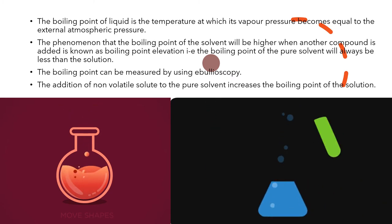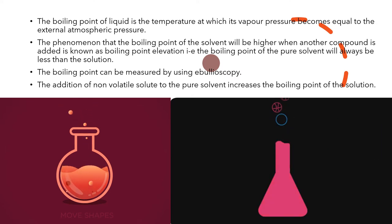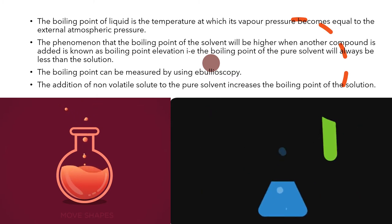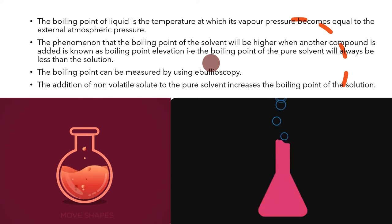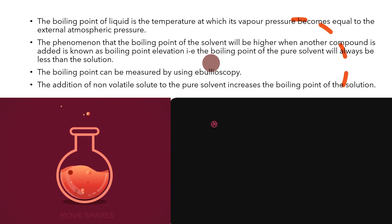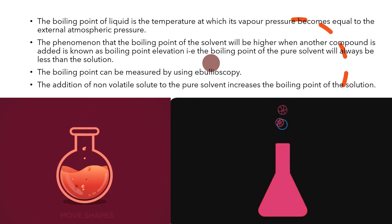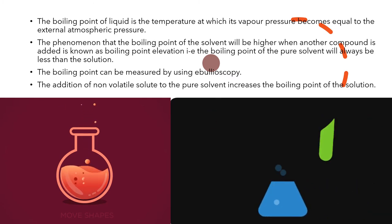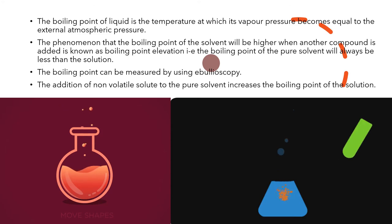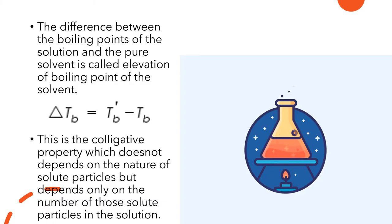To conclude, the solvent boiling point is always less than the solution boiling point, and we can measure the boiling point with the help of ebullioscopy, which is our method. An important point is that the addition of a non-volatile solute to a pure solvent increases the boiling point of the solution. When you add a volatile solute it will evaporate, but if you add a non-volatile solute it will stay in the solution, which means the boiling point of the solution will increase.